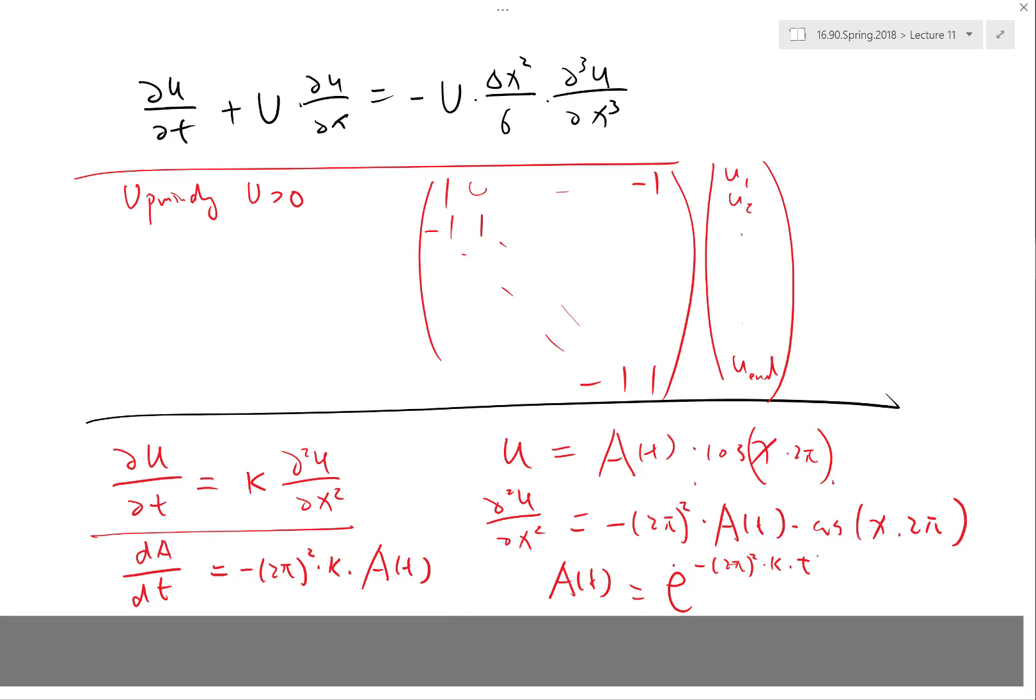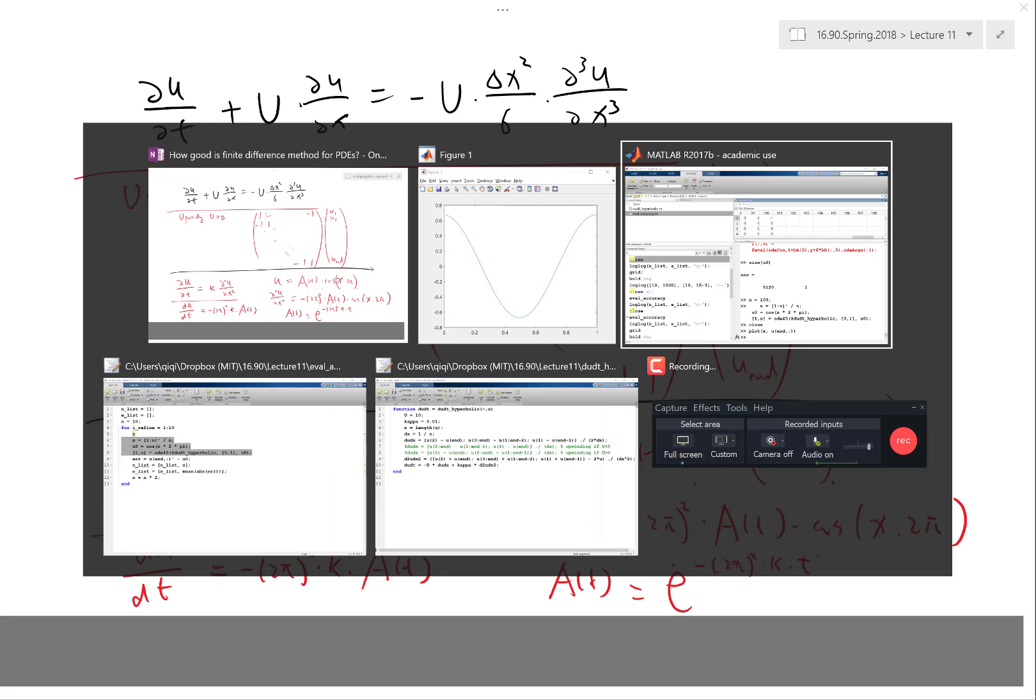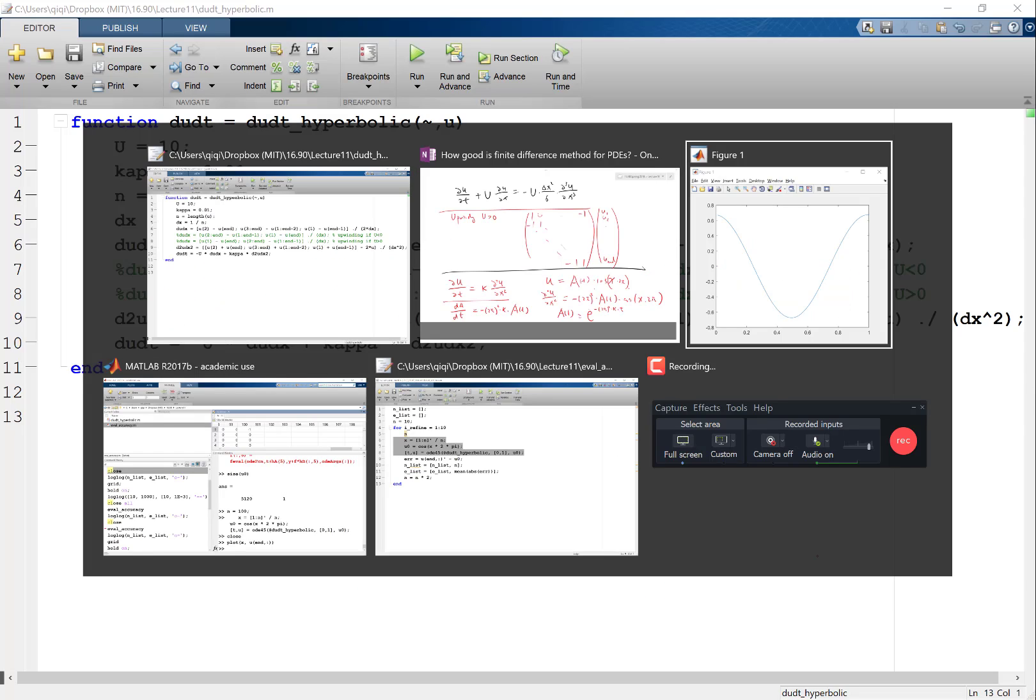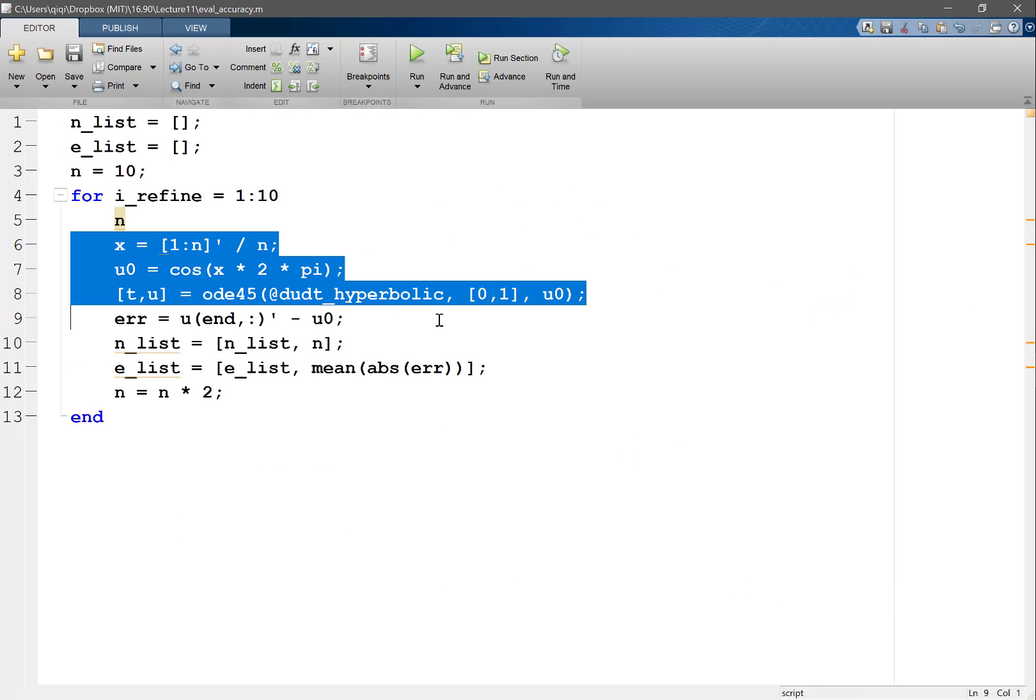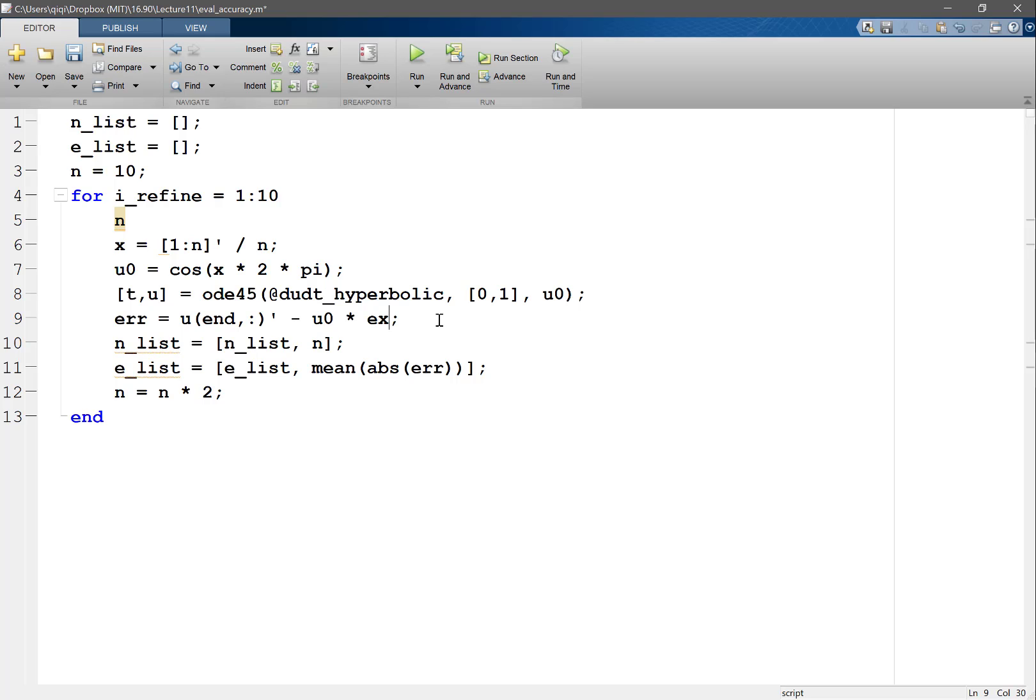That gives us a good handle to figure out the analytical solution. And here, instead of comparing this to u0, we are going to be multiplying that by exponential of minus (2π)² times kappa, which is 0.01, times t. So that's it. Any questions? We can run this again.